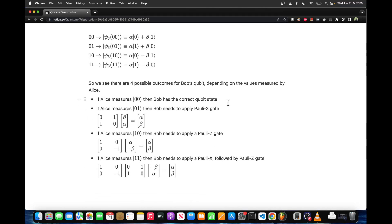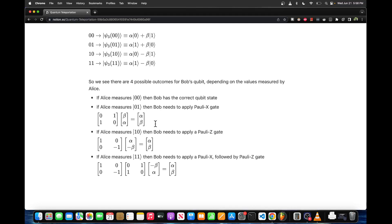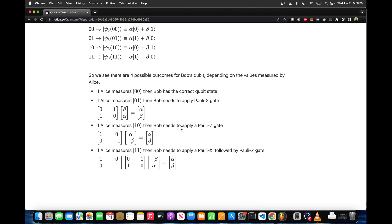This is the same thing but written out in matrix form. If Alice measures 0,0 then Bob has the correct qubit state. If Alice measures 0,1 then Bob needs to apply the Pauli X gate, and this is the Pauli X gate in matrix notation. You can see that this swaps the qubits or swaps the coefficients back to the correct way.